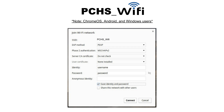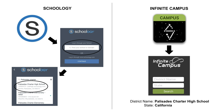If you have an Android, Chrome, or Windows device, these are the credentials you'll need to set up and get onto the Wi-Fi. For mobile apps, download the Schoology mobile app, find your school by typing in Palisades Charter High School, and log in using your PCHS credentials.